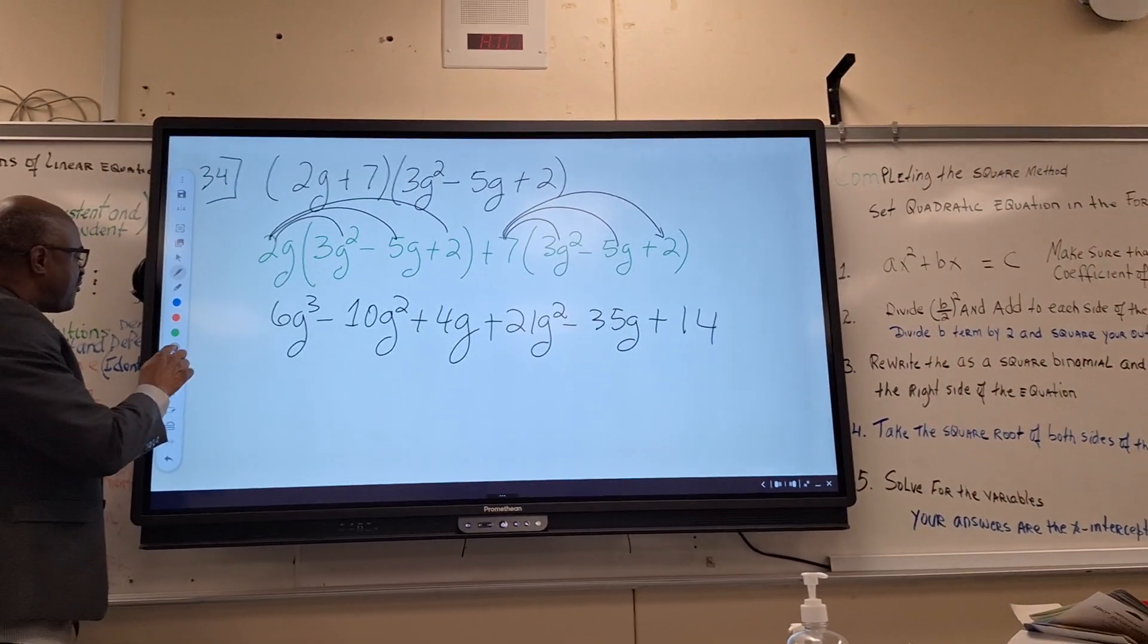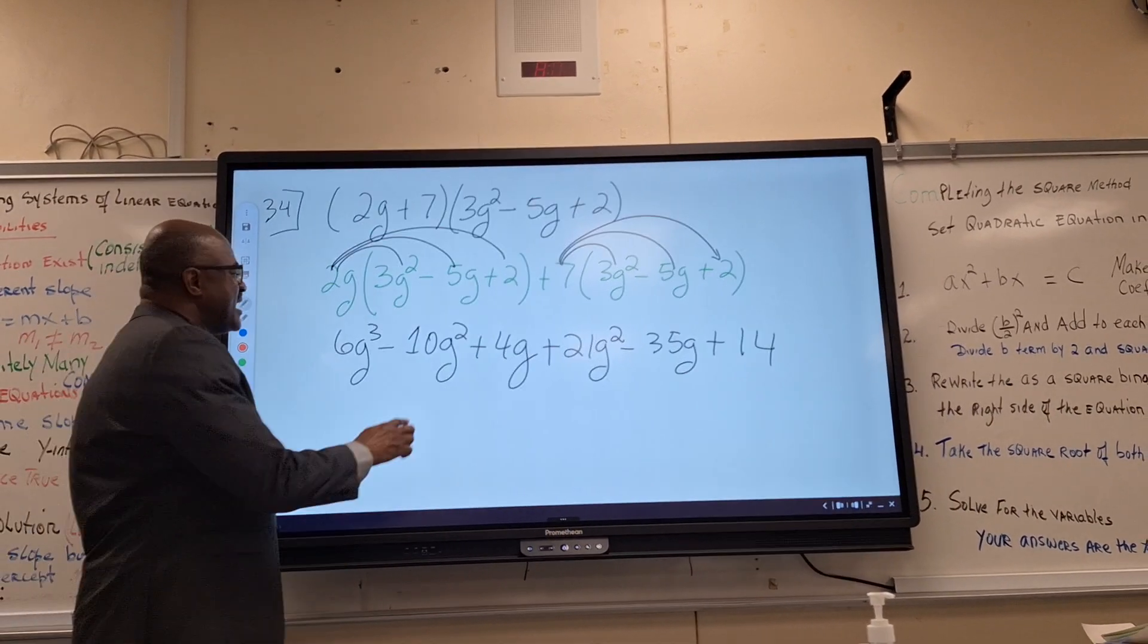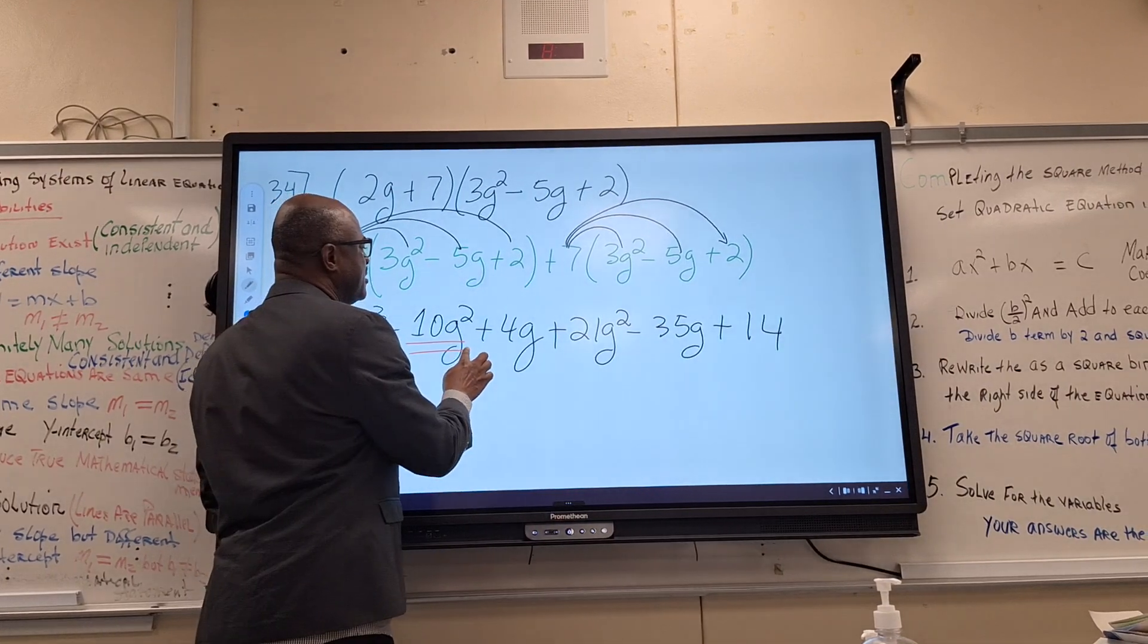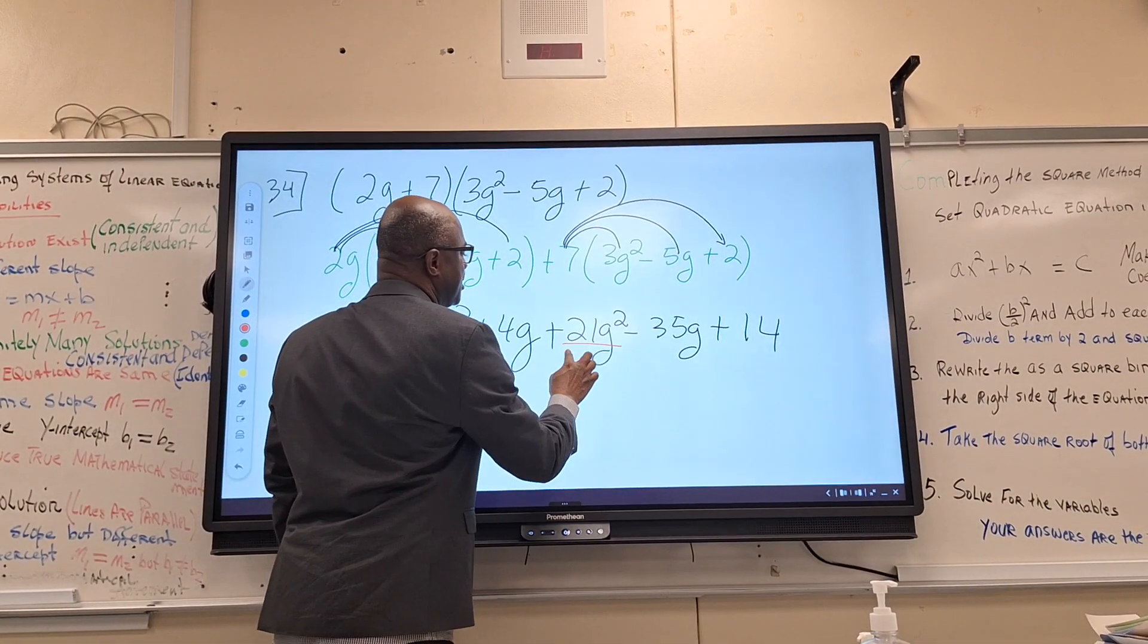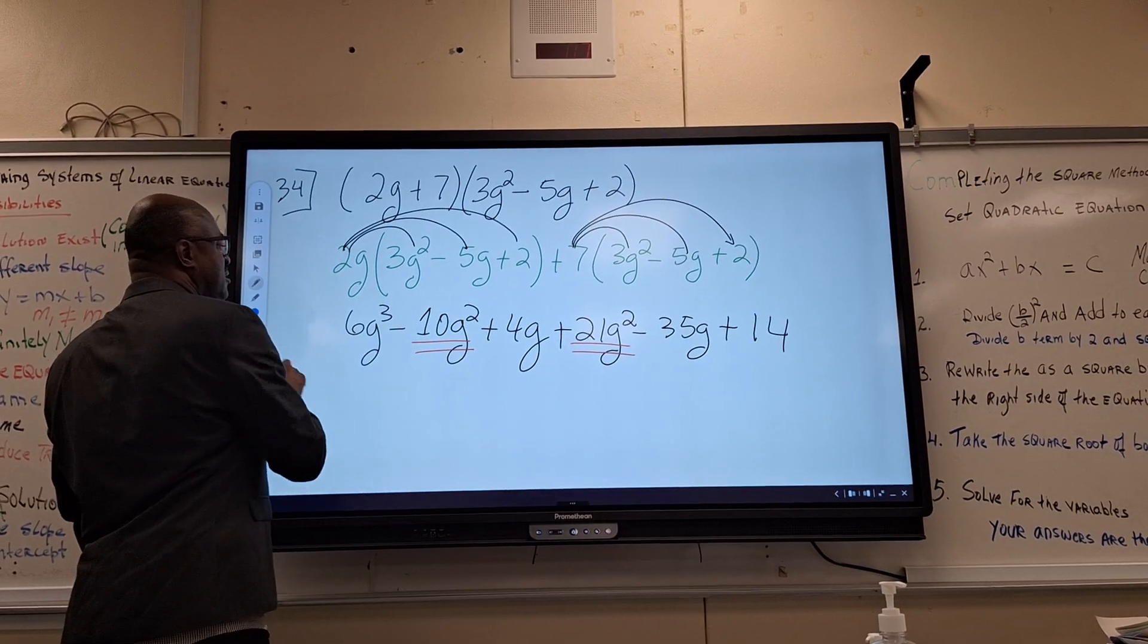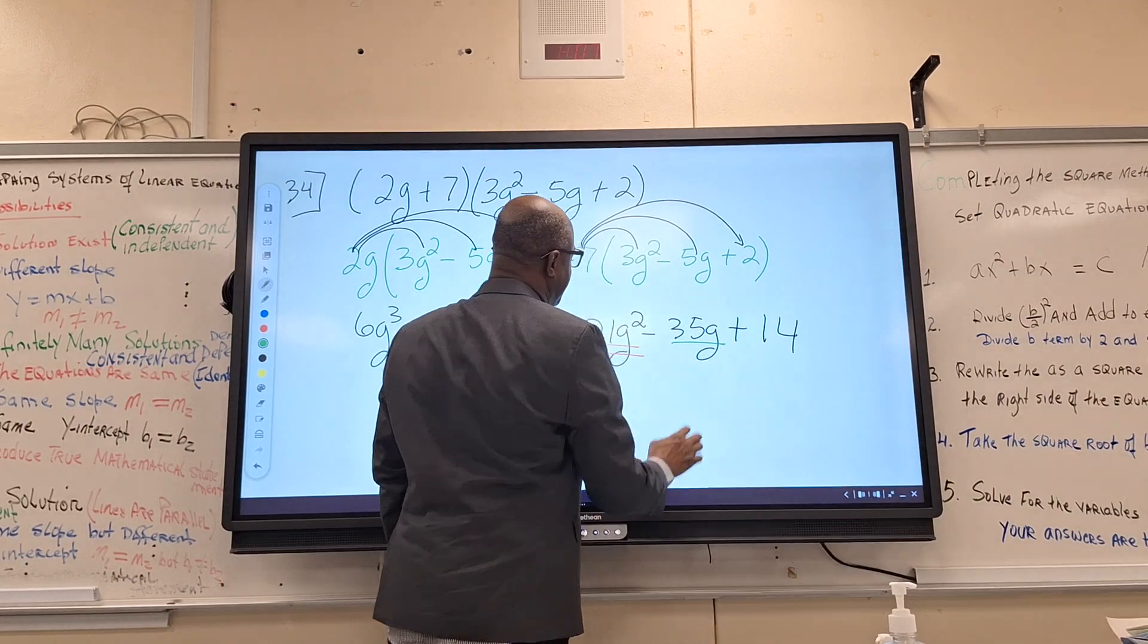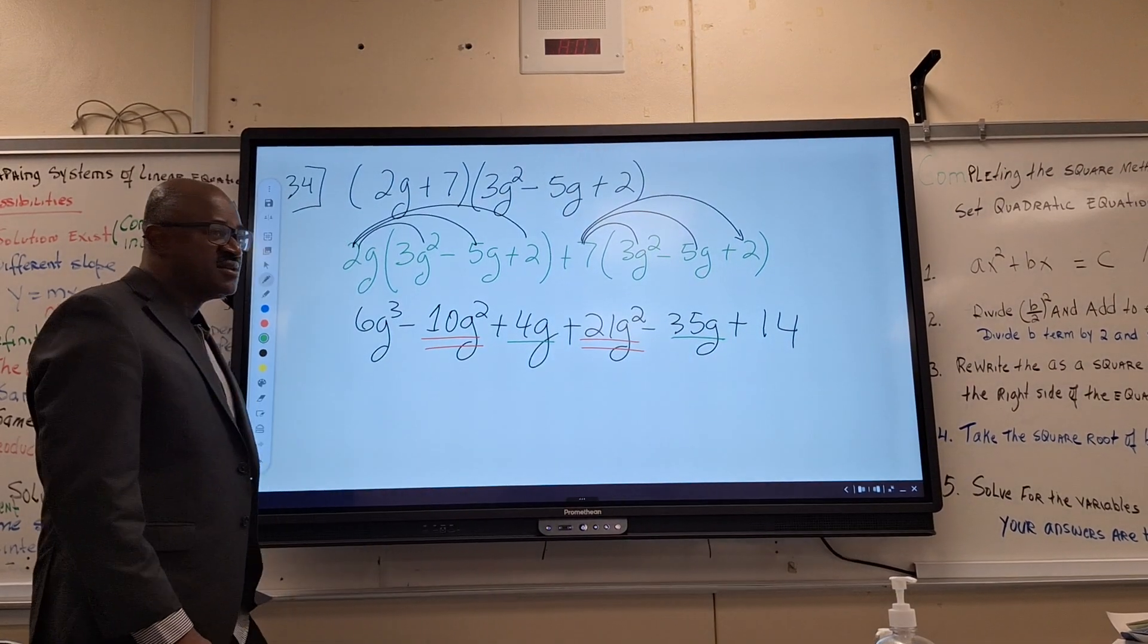Now we have to look for like terms. Which are the like terms? Negative 10G squared and 21G squared. And what else? 4G and negative 35G. And those are the like terms that need to be combined.